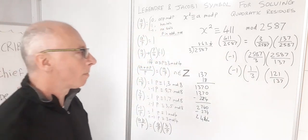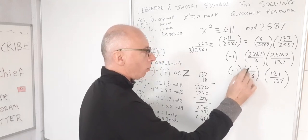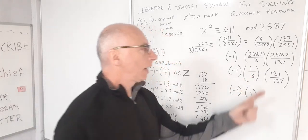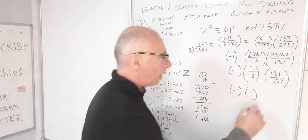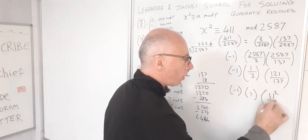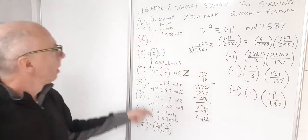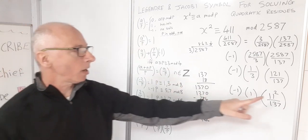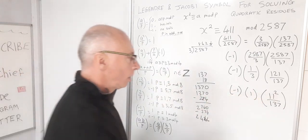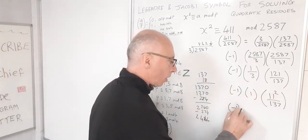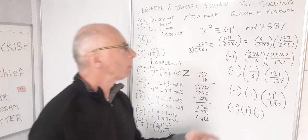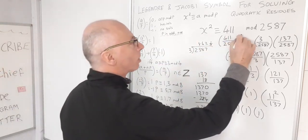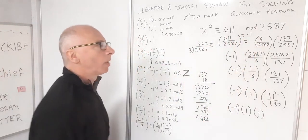Okay, let's simplify this up. So we've got minus 1, that stays. 1 over 3, well that has a solution, so that's a 1. And this one here, 121, I can see that that is a square number. So now I've got 11 squared over 137. So using this rule here, if there is a square in the top, it's definitely got a solution. So that's going to be a 1. So now I've got minus 1, a 1, and a 1, which gives me minus 1. So therefore this has got no solutions. So this symbol here is minus 1. So there's no solutions.